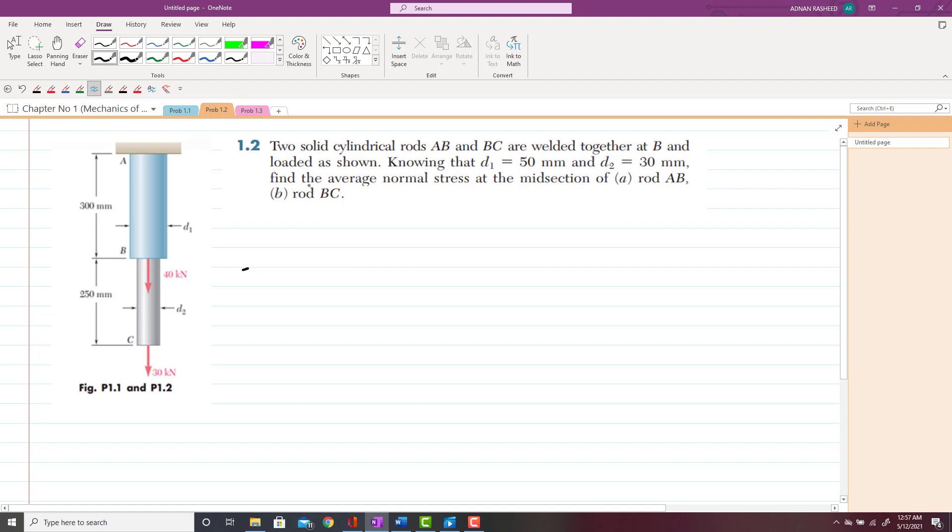So here you will have to find the average normal stresses at mid-section of rod AB and BC. So you have to find the average normal stress, which is sigma_AB over here and sigma_BC over here.